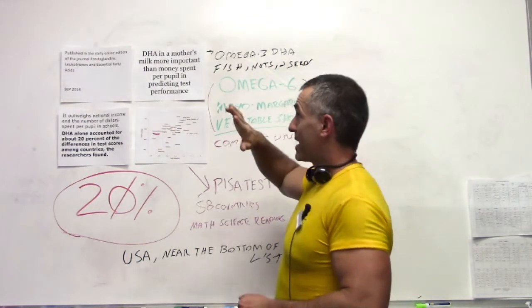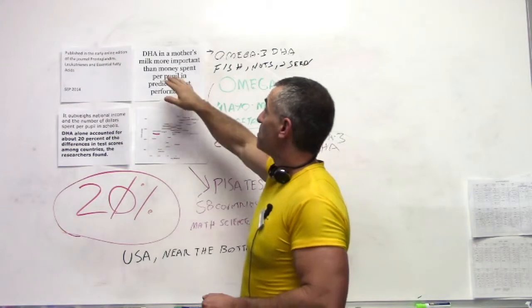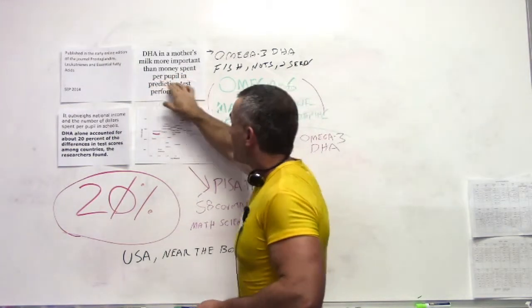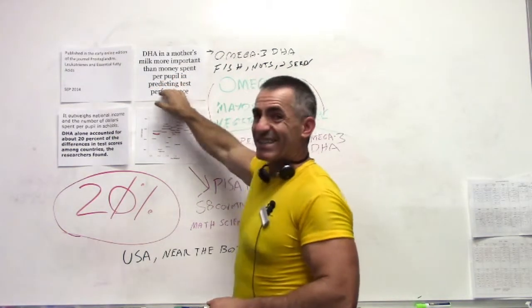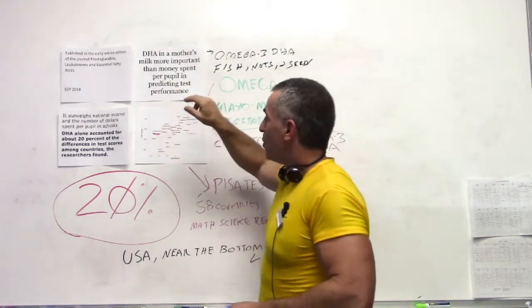And they were able to correlate effectively with the DHA in the mother's milk. And again, they came to the conclusion that the DHA in mother's milk is more important than the money spent per pupil in predicting test performance, which is phenomenal.